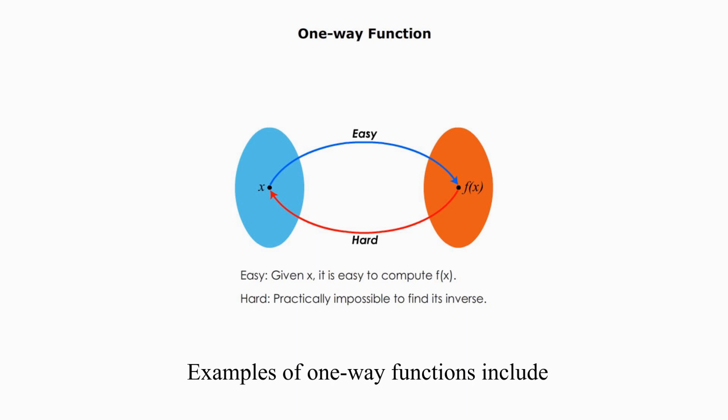Examples of one-way functions include prime factorization, discrete exponential, discrete logarithm problem, and secure hash functions.